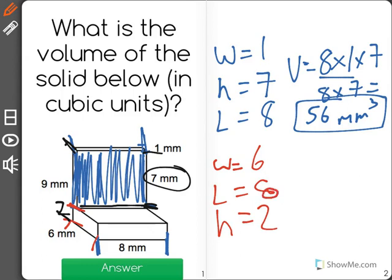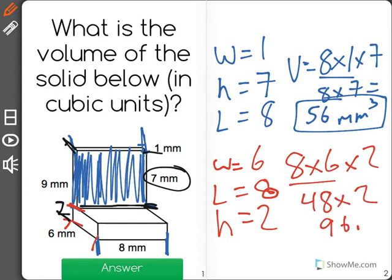Now, when we multiply this, we do 8 times 6 times 2, which is 48 times 2, or 96 millimeters cubed.